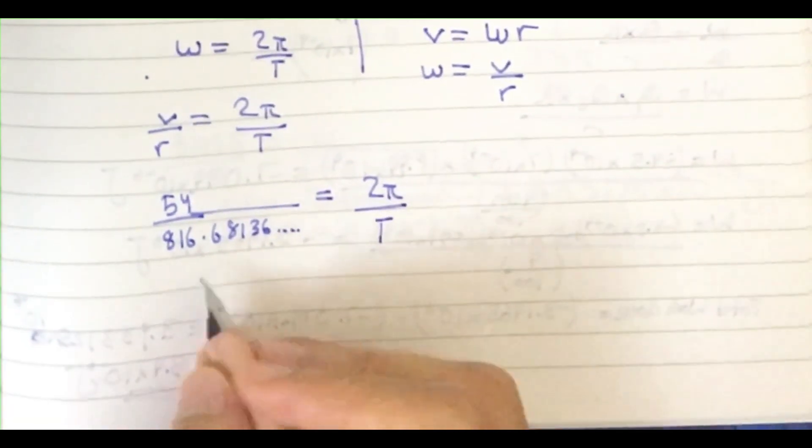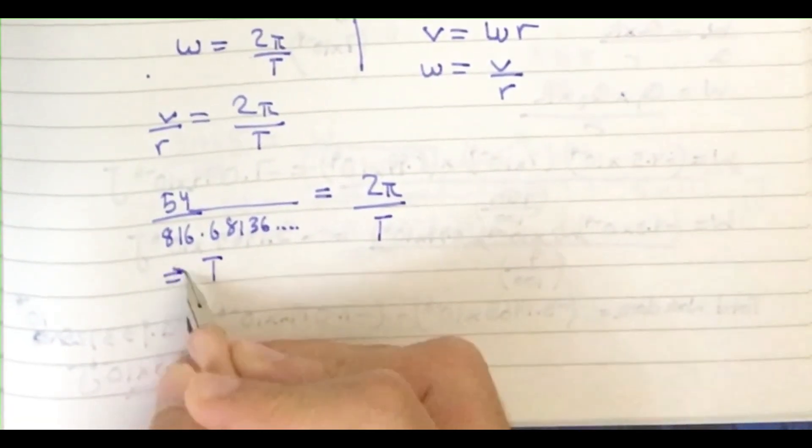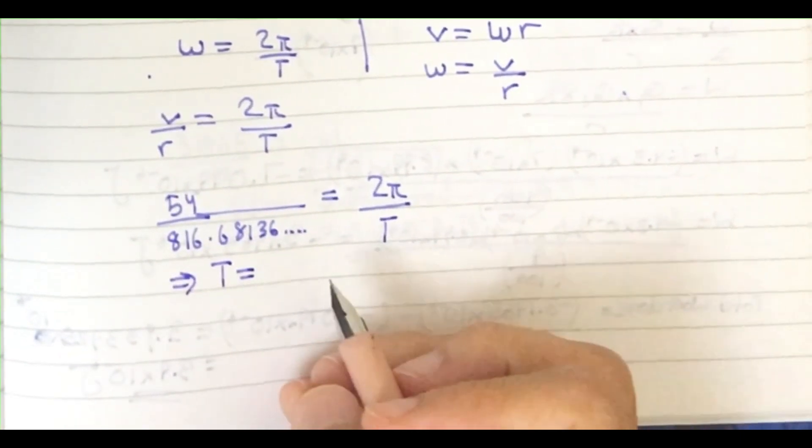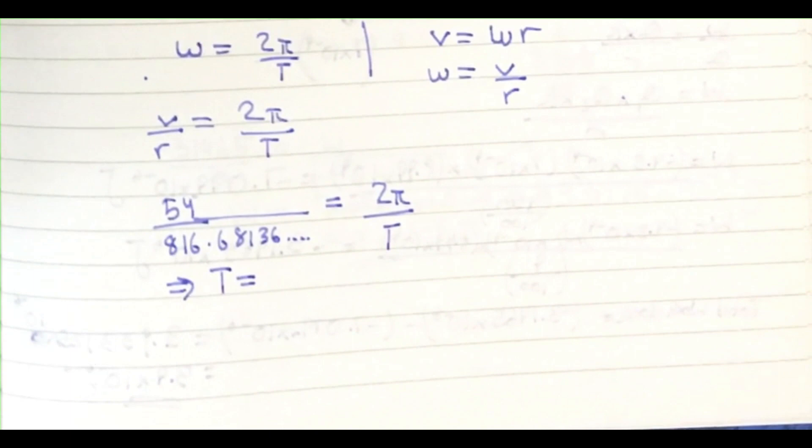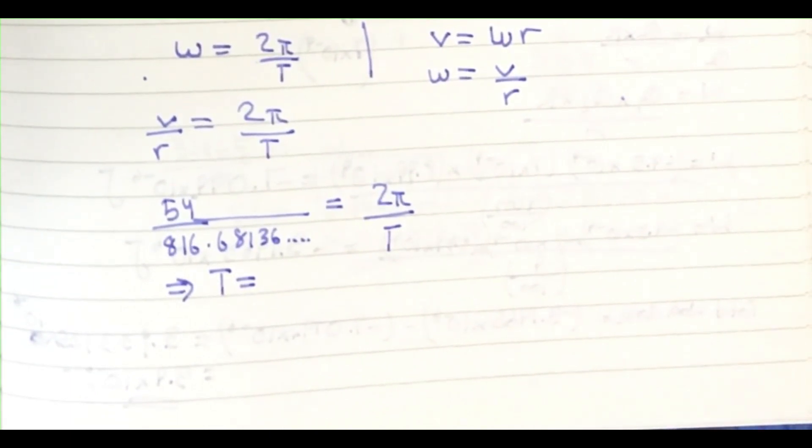Let me calculate it: 816.68136 times 2π, divided by 54. You get 95.025. Then you divide by 4 because I calculated for 360 degrees.